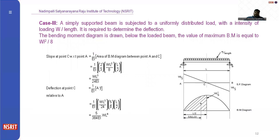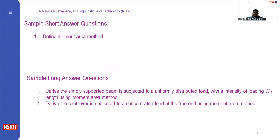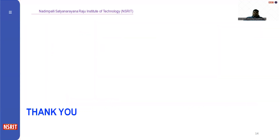Now let us consider a simply supported beam with a uniformly distributed load (UDL) of intensity w over the entire length. The First Theorem states that the slope at point C equals (1/EI) times the area of the BMD from A to C. The shape here involves a parabolic diagram. Using these formulas, the slope and deflection at C and A are found. These are the important results for slope and deflection, as frequently asked in examinations. Thank you.